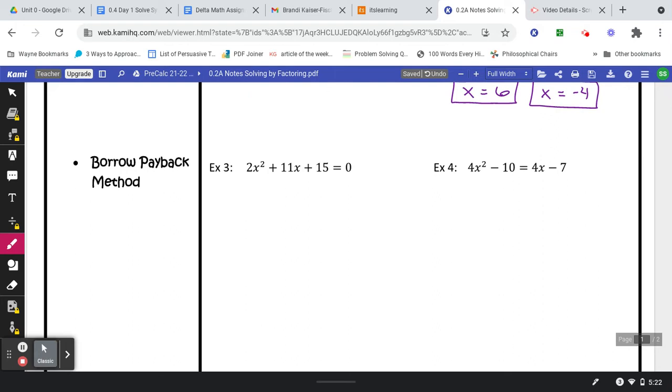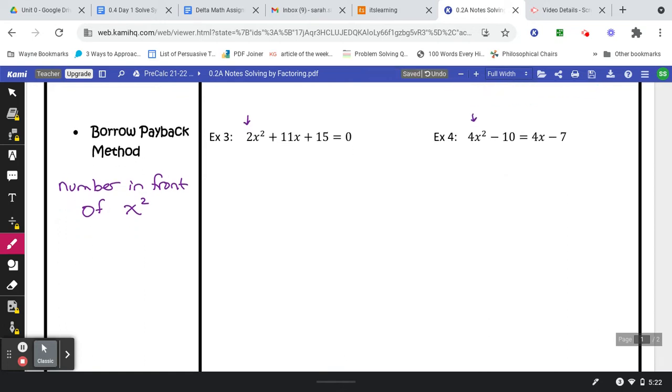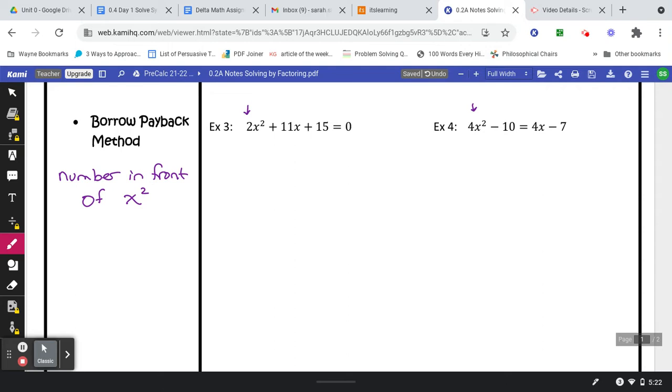Then we're going to deal with problems that have a number in front of the x squared. So notice right there you've got that number in front of the x squared and right here the number in front of the x squared. So what we're going to do is a method called borrow payback. In this method, you're going to have three steps. The first thing you're going to do, and I'm going to color code this so you can see it as I work. Step number one, you're going to borrow. And when we borrow, we multiply.